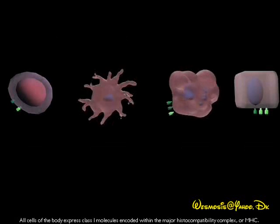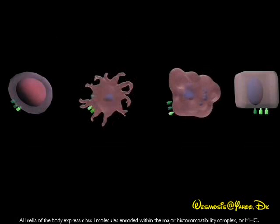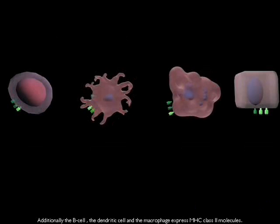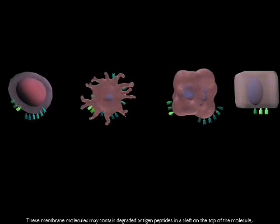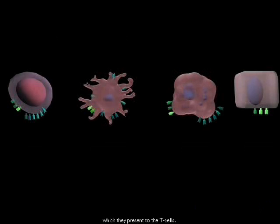All cells of the body express class 1 molecules encoded within the major histocompatibility complex, or MHC. Additionally, the B cell, dendritic cell, and macrophage express MHC class 2 molecules. These membrane molecules may contain degraded antigen peptides in the cleft on the top of the molecule, which they present to the T cells.